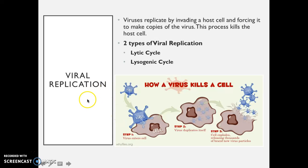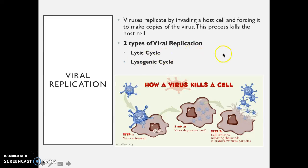There are two types of viral replications that you need to be aware of — two ways that viruses reproduce. Some viruses do one way and other viruses do the other way. The two ways — make sure that you write this down — are the lytic cycle and the lysogenic cycle. We're going to see what these two are and how viruses replicate through these two different cycles.